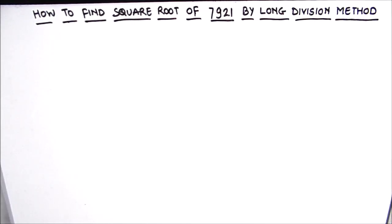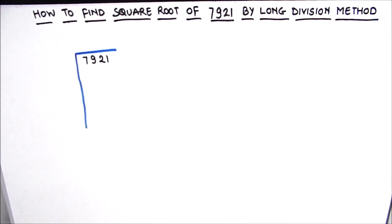Hello students, in this video we are going to learn how to find the square root of 7921 using the long division method. The long division method is used for finding the square root of large numbers. Without wasting any time, let's get started.